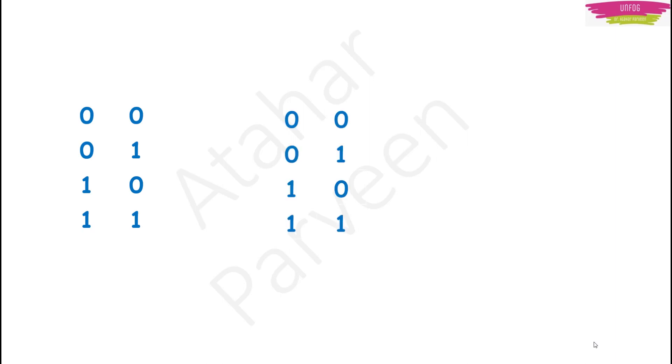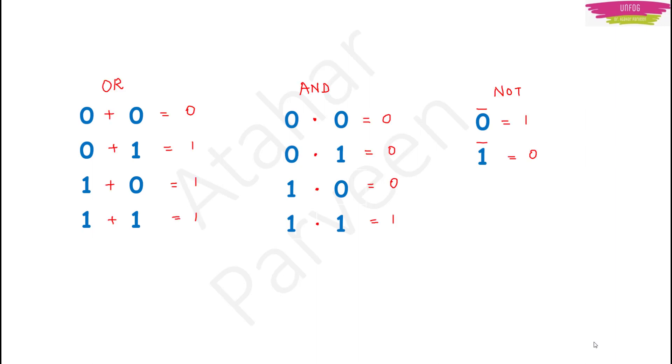We are talking about two inputs here. There will be two inputs and one output. These two inputs will be either 0s or 1s. We make a table to write those inputs and the output we get — we call these tables truth tables. We can make truth tables for all three operations: OR, AND and NOT.